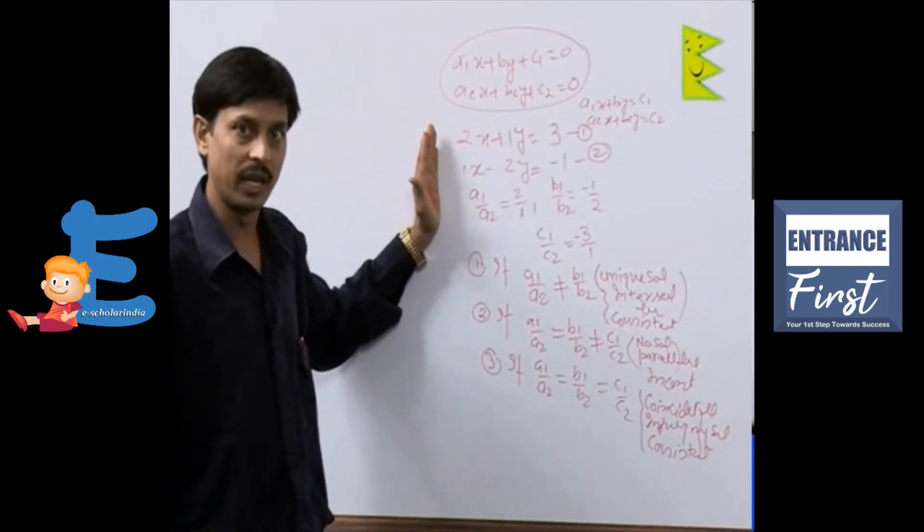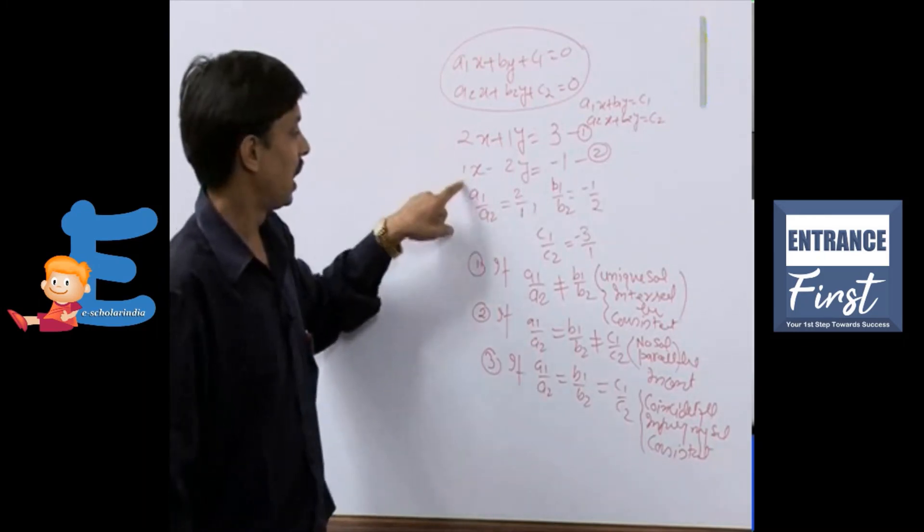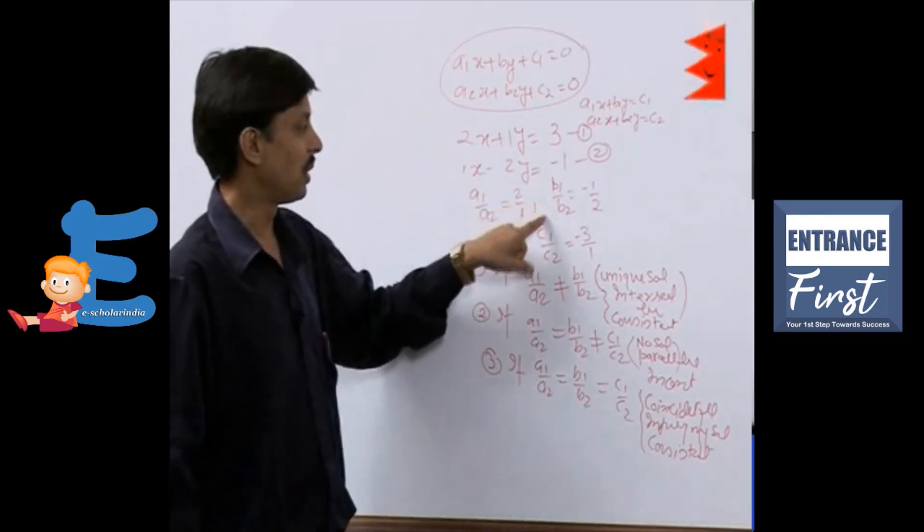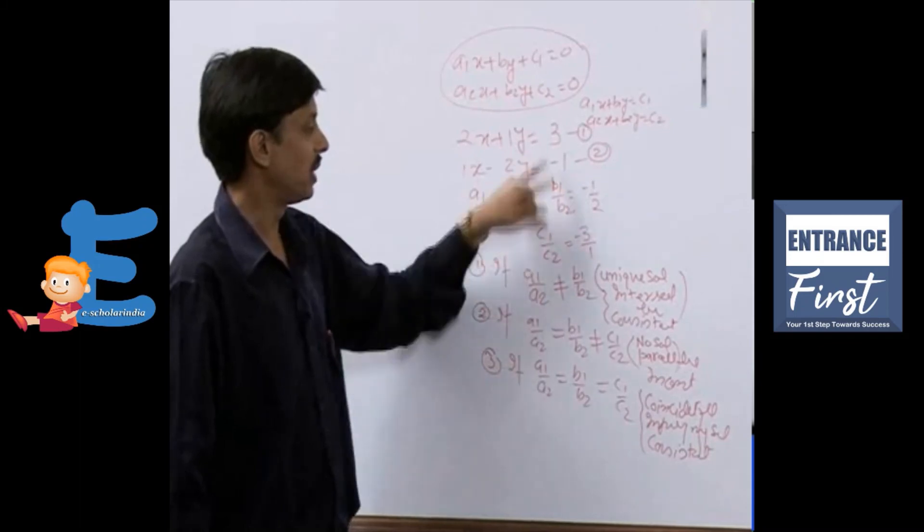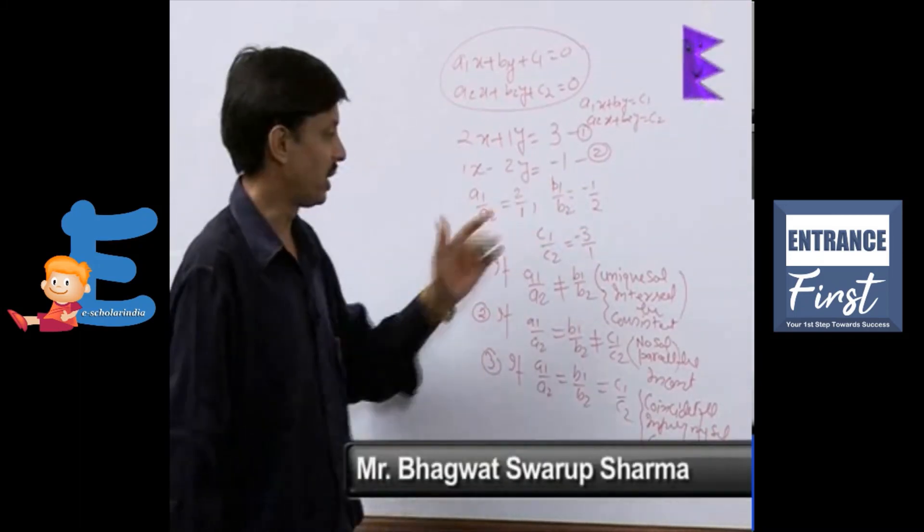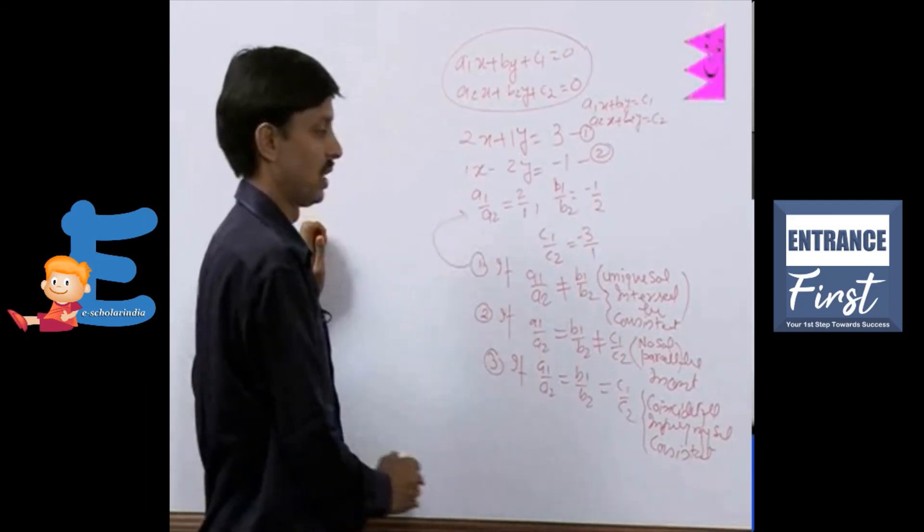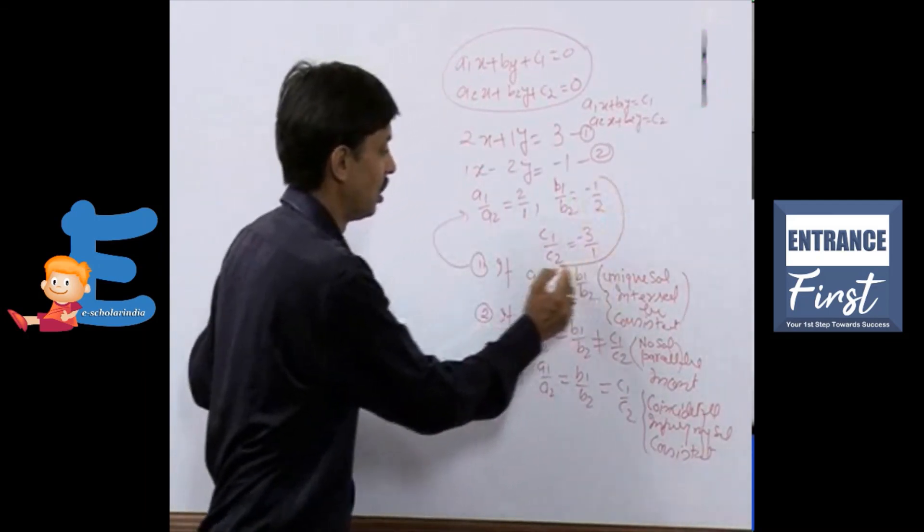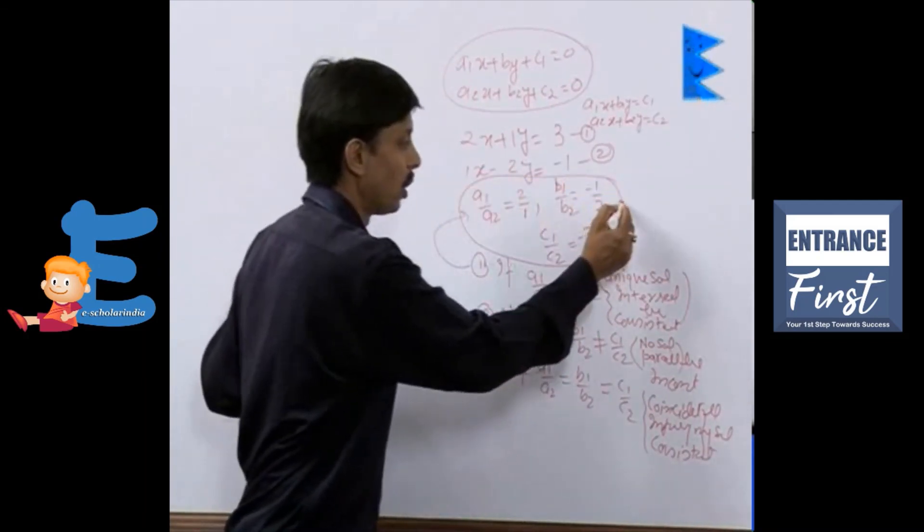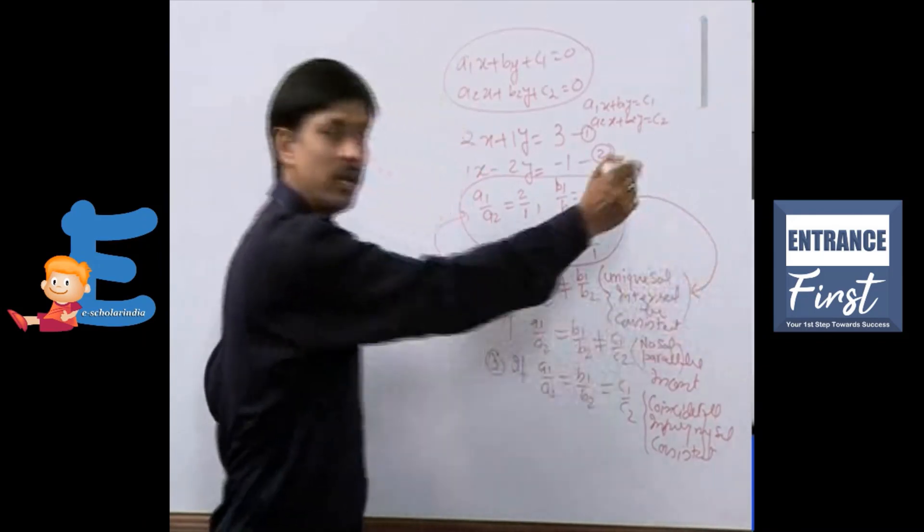Here in this example which I am taking, here what you are finding? a1 by a2 is 2 by 1, b1 by b2 is minus 1 by 2, c1 by c2 is minus 3 by 1. What is coming out to be? It is satisfying the condition number 1. Here for this part, if we observe, this condition is being satisfied.